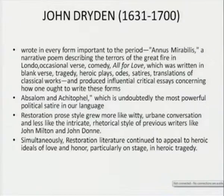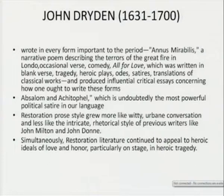When we look at Dryden, he wrote in every form important to the period: Annus Mirabilis, a narrative poem; All for Love, written in blank verse; tragedy; heroic plays; odes; satires; translation of classical works. His Absalom and Achitophel has been undoubtedly the most powerful political satire in the language. Restoration prose style grew out of this and became more witty, not rural or pastoral but urban — confined to the towns, to the cities, to the upper class, urban conversation — and less like the intricate rhetorical style of previous writers like John Milton and John Donne.